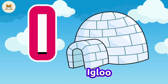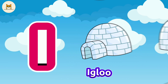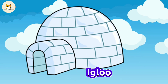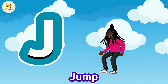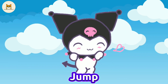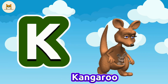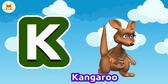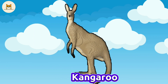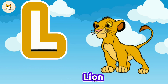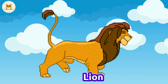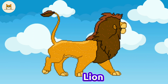I is for Igloo. I, I. Igloo. J is for Jump. J, J. Jump. K is for Kangaroo. K, K. Kangaroo. L is for Lion. L, L. Lion.